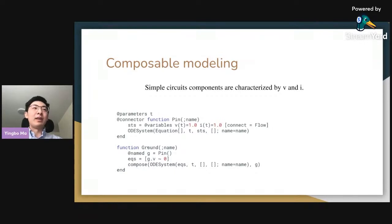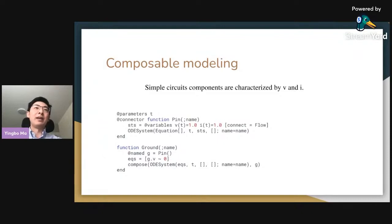We also need to define a ground. The concept of ground is often skipped in introductory physics, but it's important in simulation because all voltages are only defined relative to each other. So if we have a particular solution, any constant offset in voltage is also a solution. To ensure a unique solution, we set one component's voltage to zero — that is the ground.